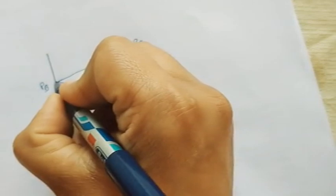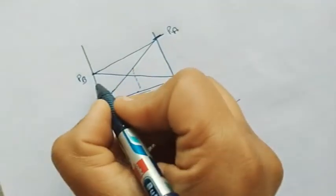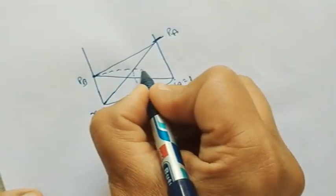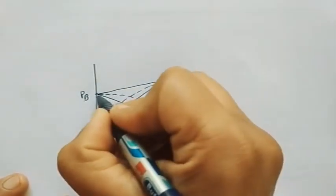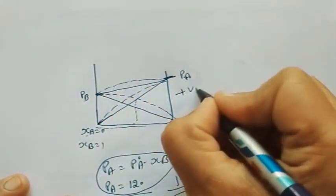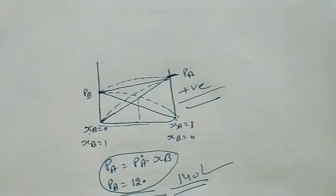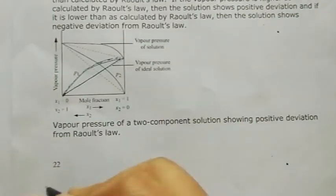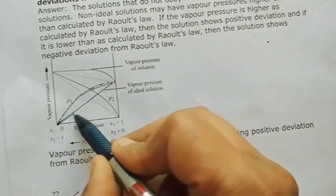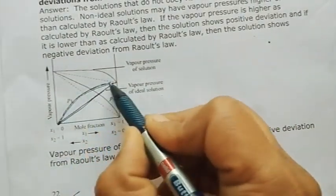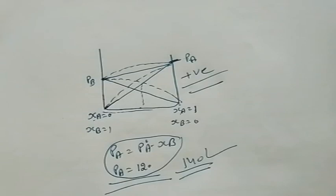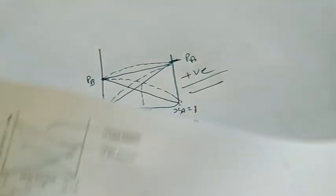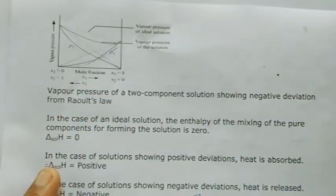Since the experimental value is more than calculated, the graph is showing a higher value — it is above the ideal Raoult's law line. This graph showing values above the ideal line represents positive deviation. In the notes on page 22 this graph is shown: the normal Raoult's law line, and above it the positive deviation curve.